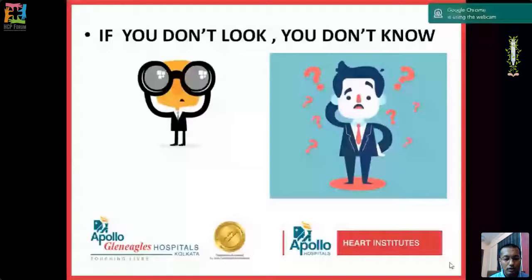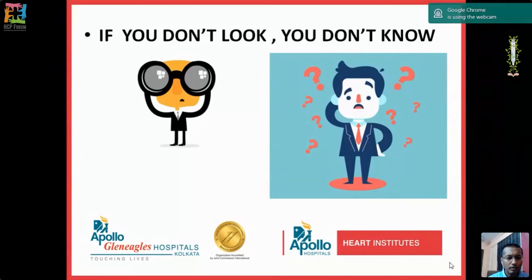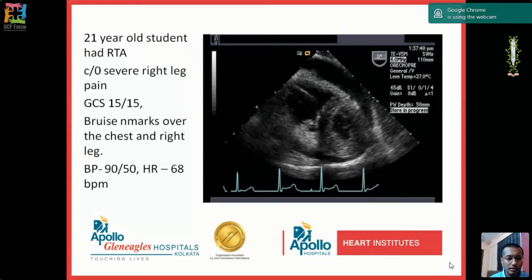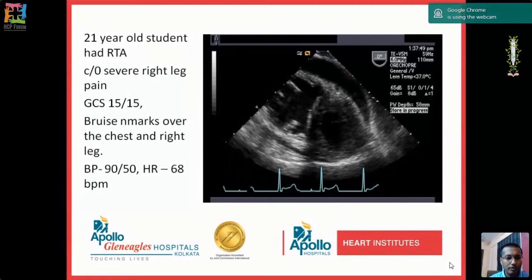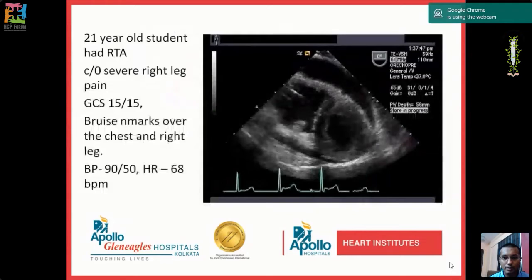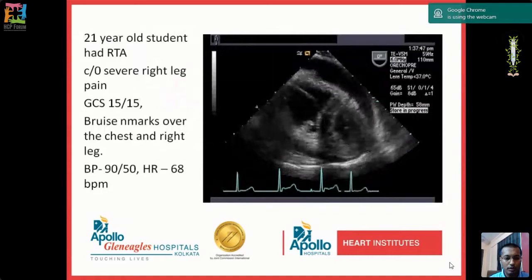The first thing I'd like to say is: if you don't look, you don't know. Consider a 21-year-old student with an RTA presenting with severe right leg pain, diagnosed as right femoral fracture, GCS 15/15, with bruising marks over the chest and right leg. When the anesthetist takes him for right femur fixation, BP shows 90/50 and heart rate is 68. If you put up echo, you see a huge pericardial tamponade with RV dilatation — and the whole anesthetic management changes.